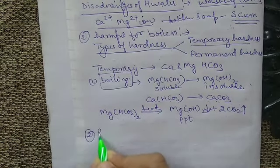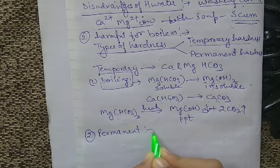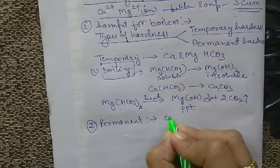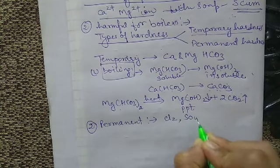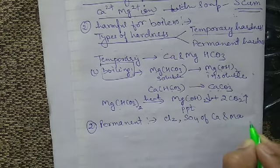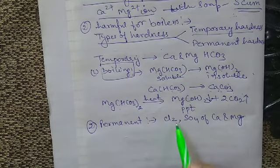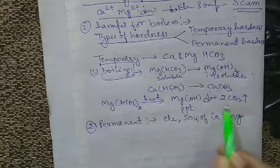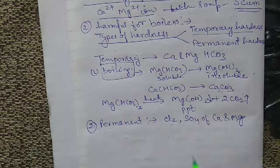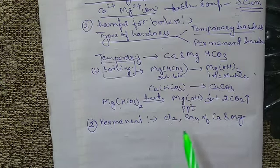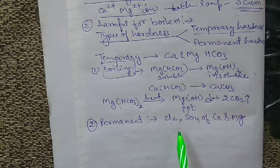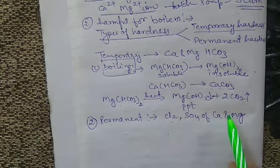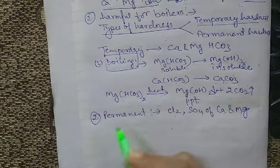The second topic is permanent hardness. Permanent hardness is caused by the presence of chlorides and sulphates of calcium and magnesium in the water. It is called permanent hardness because it cannot be removed by simple boiling. To remove it, we have to use some unique techniques.